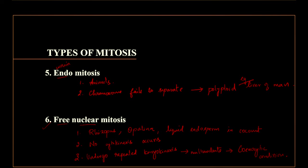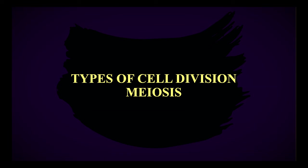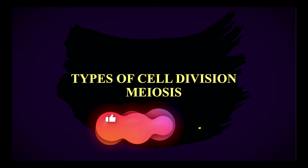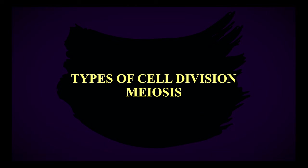In the next session we are going to see about meiosis in detail. Coming back to the types of cell division — we have discussed about amitosis and mitosis in our previous session, and here we are going to discuss about meiosis.